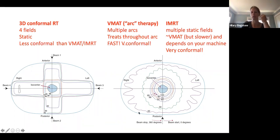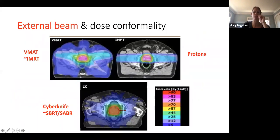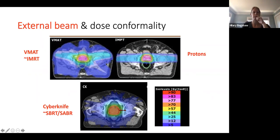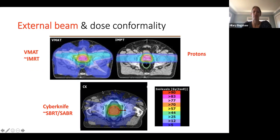This dose color wash shows isodose levels — red or pink is the highest 90%, yellow is around 50%. With VMAT or IMRT, most of the dose is concentrated around the prostate, avoiding other organs from high dose, though there is some low dose spill. CyberKnife delivers a similar dose distribution to VMAT with some nuanced differences.